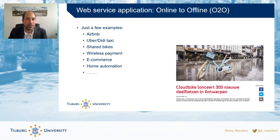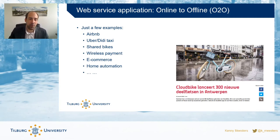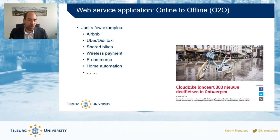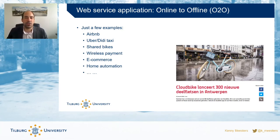Examples you probably know are Airbnb — Airbnb does not own, or has very limited, own locations, but rather connects people who have a location with somebody who doesn't. Same for Uber, shared bikes, wireless payments, and so on. What is interesting is that these platforms also enable people who previously weren't online or weren't offering their products and services online to do that without making major investments. If you had a small cottage that you were renting out before, you may have had to rely on word-of-mouth advertising with limited reach.